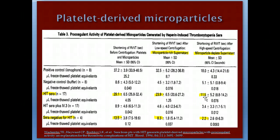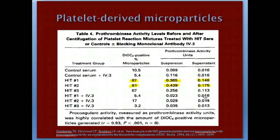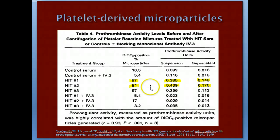Further proof came from testing prothrombinase activity — a marker of thrombin formation. HIT serum patients had a higher percentage of microparticles secreted, leading to higher prothrombinase activity units, confirming the procoagulant nature of the microparticles.